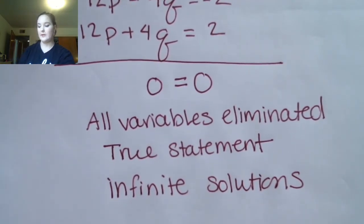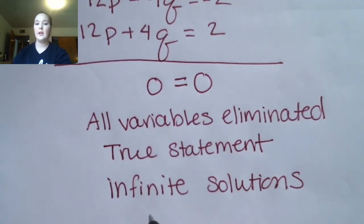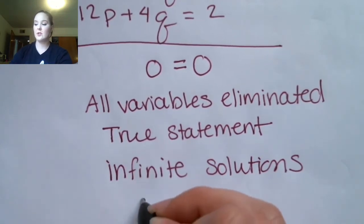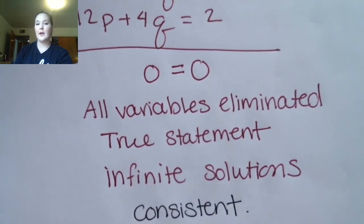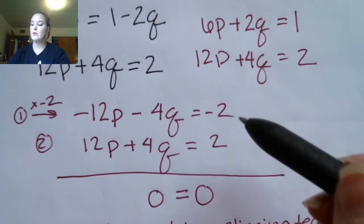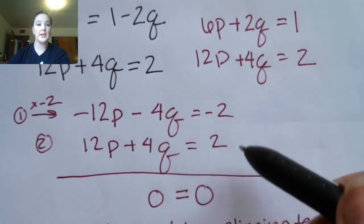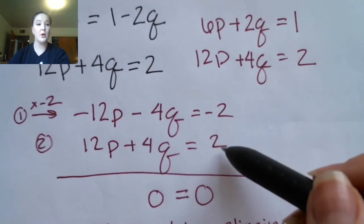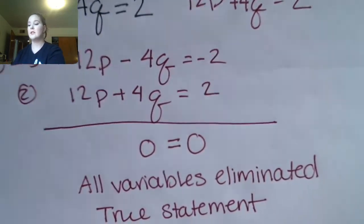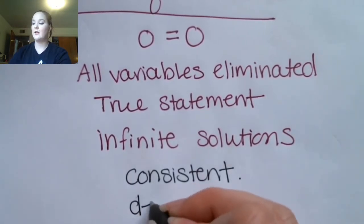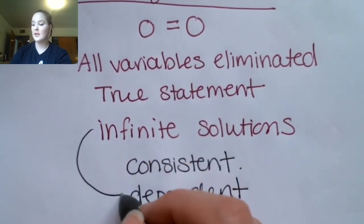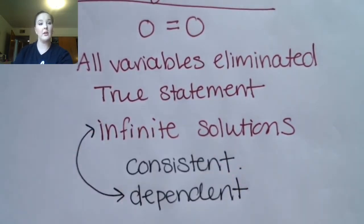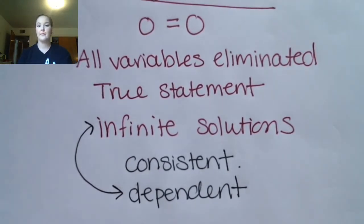Let's talk about consistent, inconsistent, dependent, and independent. If there are infinite solutions, there are certainly solutions, so it's consistent. These equations are multiples of one another, so they're not really independent — this is a perfect example of a dependent system. You can see that infinite solutions and dependent go together, as we also saw with the graphing.